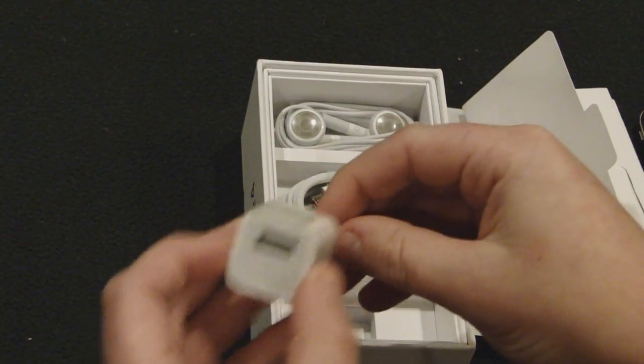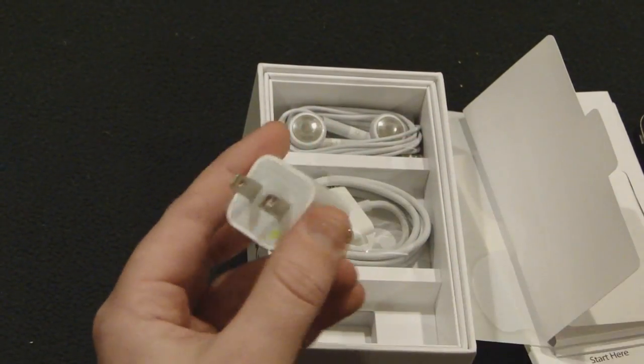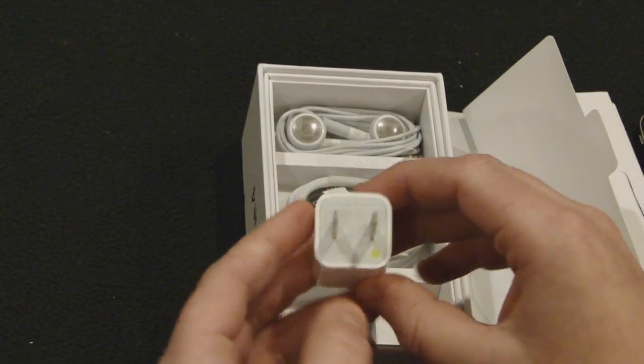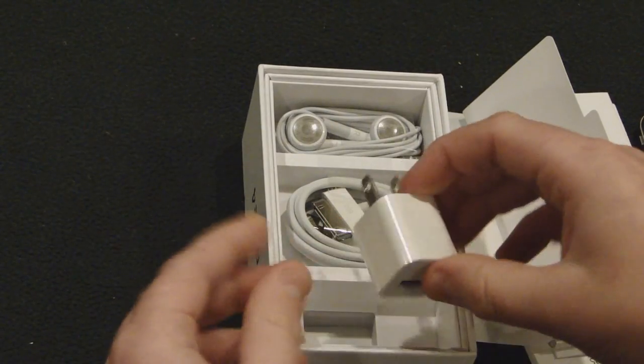And then you've got your wall adapter. If you have the one with the green dot, it means it's one of the newer models. I know in the iPhone 3G, these used to come out of the wall really easily. You can get electrocuted by that.